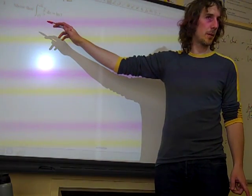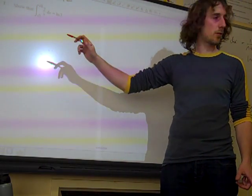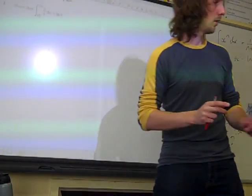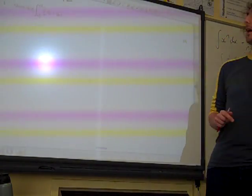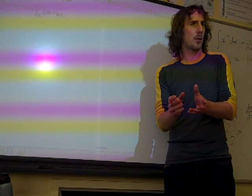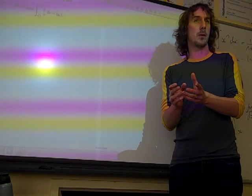Integrating 2 over x. Now we know that if we integrate 1 over x, we get the natural log of x, don't we? So 2 over x must be just twice that.